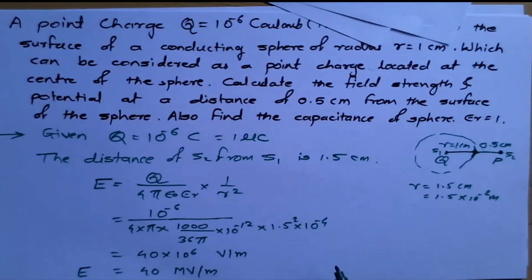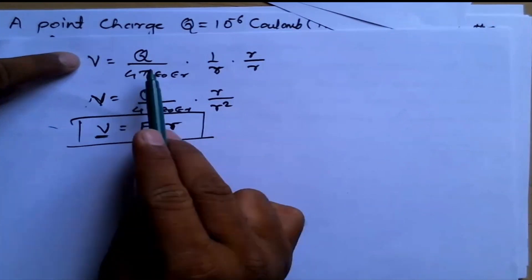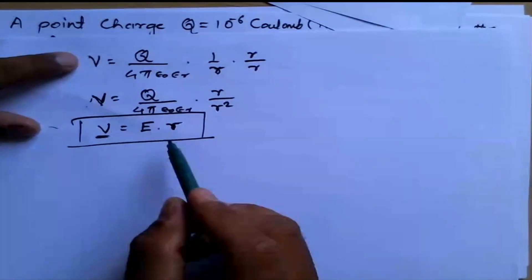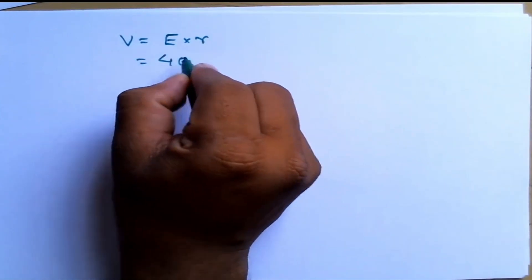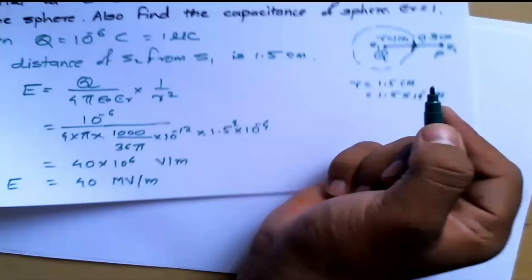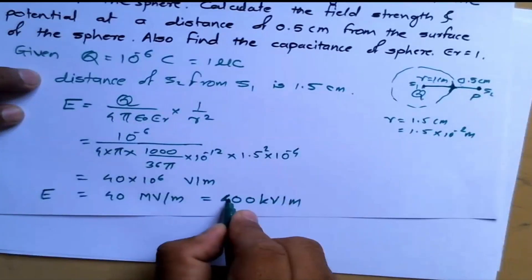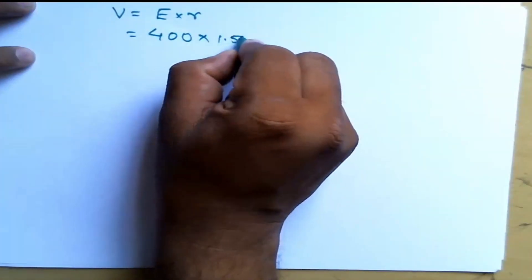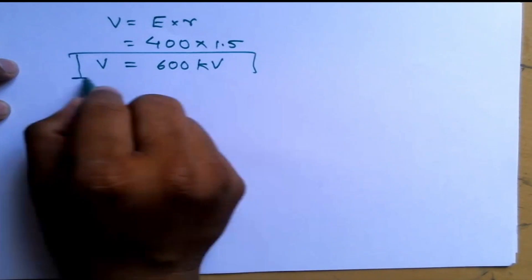Next we calculate the potential at a distance of 0.5 cm from the surface. Using the relation V = E × r, where r = 1.5 cm. With E = 400 kV/m (i.e., 40 MV/m), potential φ = 400 × 1.5 = 600 kV. So the potential at point P is 600 kV.